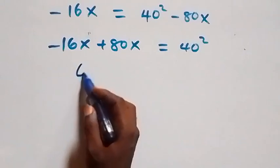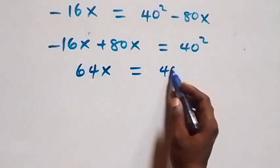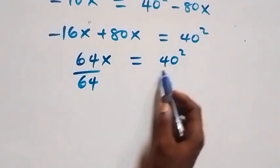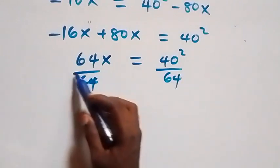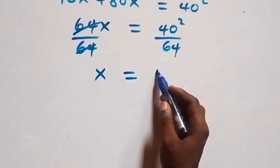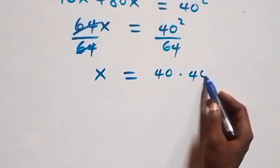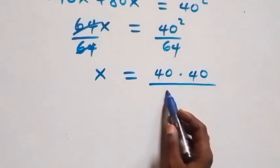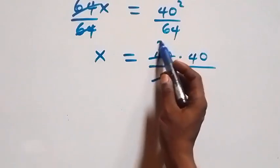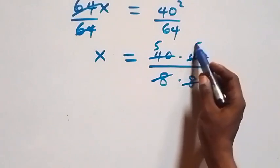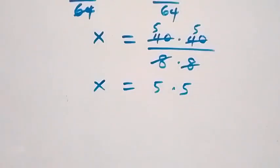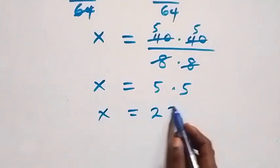-16x + 80x gives us 64x equals 40 squared. Dividing both sides by 64: x = (40 × 40) / 64 = 1600 / 64. Simplifying — 40/8 = 5, and 40/8 = 5 — so x = 5 × 5, which means x equals 25.